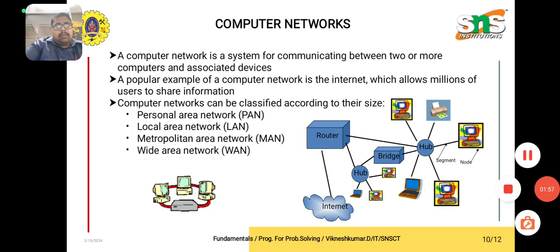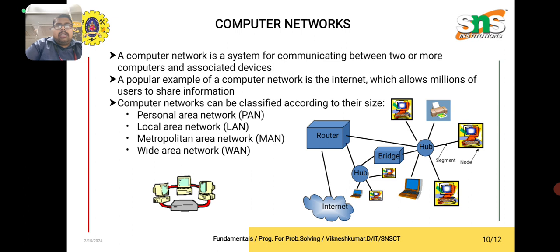Next, a very important topic: computer networks. A computer network is a system for communicating between two or more computers and associated devices. The popular example of computer networks is the internet — the internet allows you to communicate between two different networks, allowing millions of users to share information and interact between them.